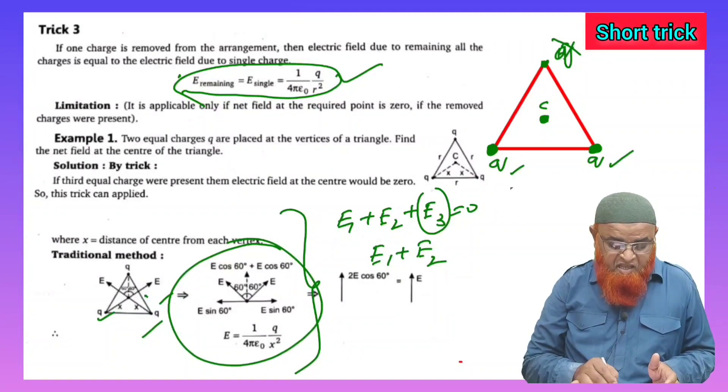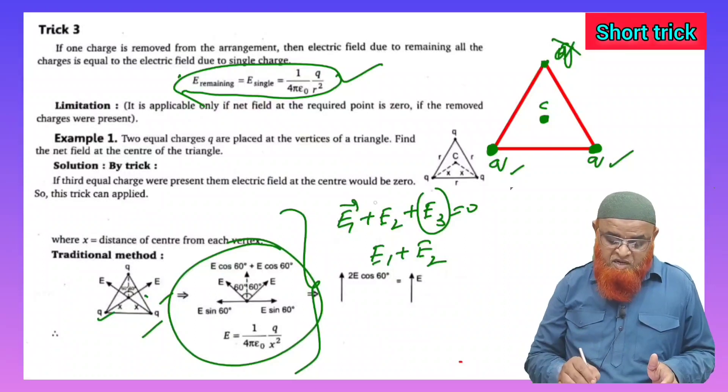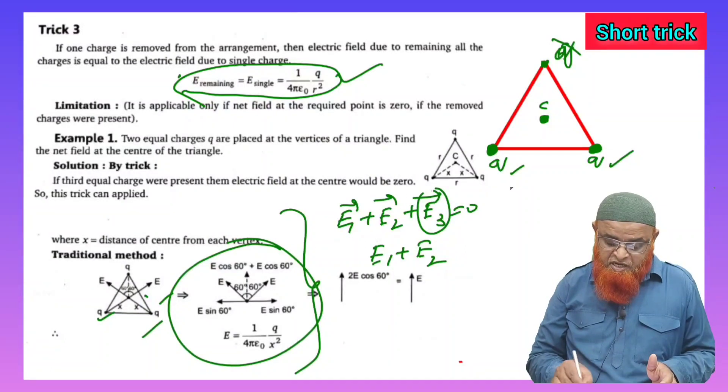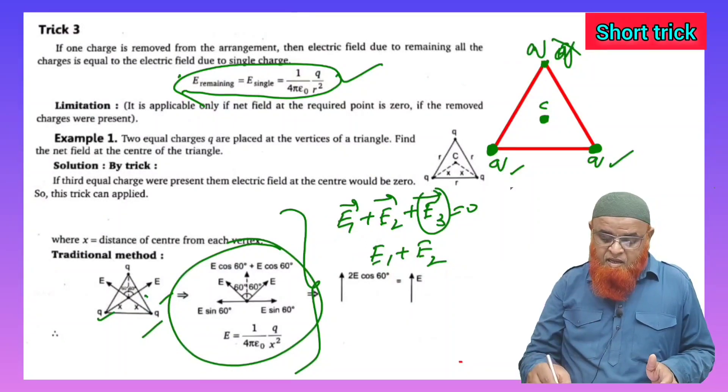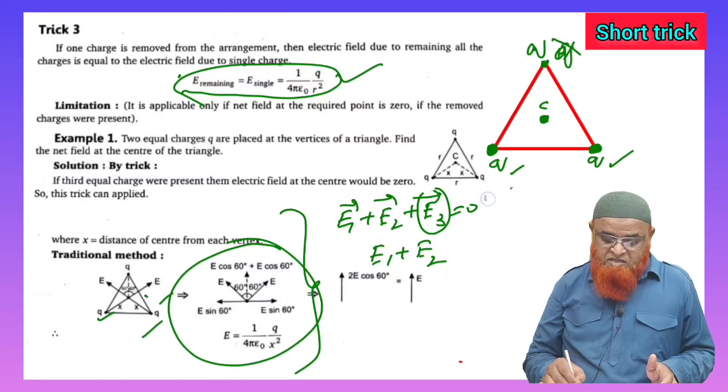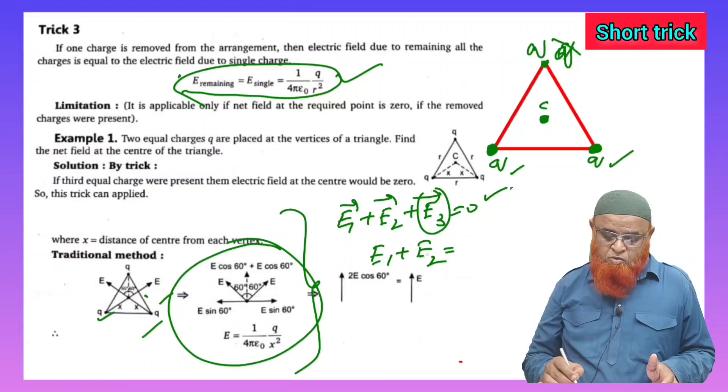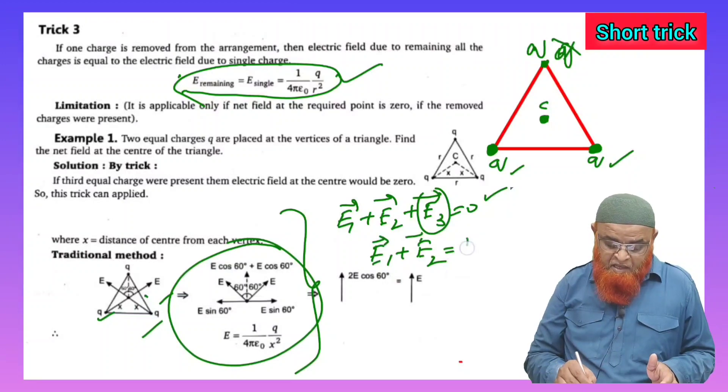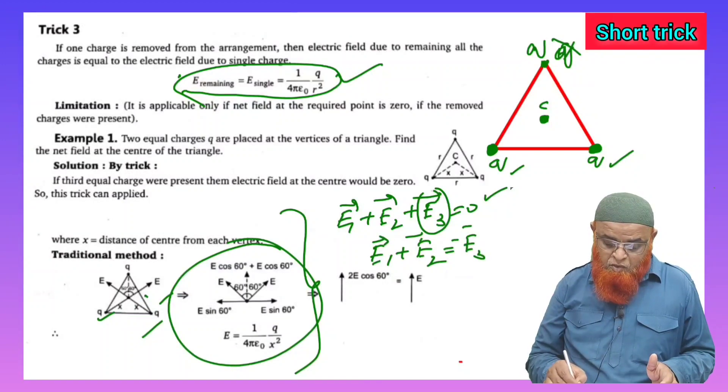E_remaining equals E_single. What is the meaning of that? Here, E1 + E2 + E3 - if q is present at the middle, the vectors E1 + E2 + E3 equals zero. You know about that. Or else you can also take E1 + E2 = -E3.